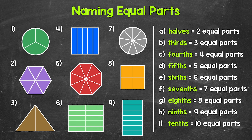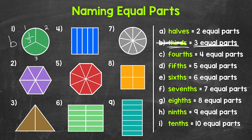For example number 1, this circle — our whole — has been divided into 1, 2, 3 equal parts. So 3 equal parts. We call 3 equal parts thirds. So let's put a B next to number 1 and cross off thirds. Now each of the equal parts is 1 third of the whole circle.